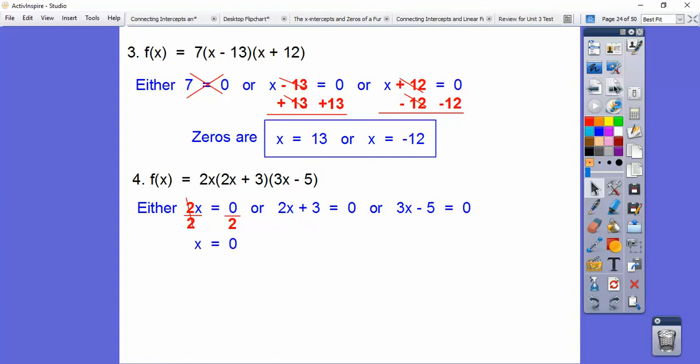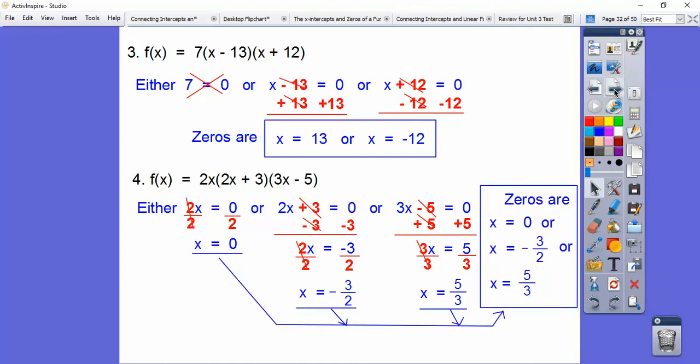This one here, we're going to go minus 3, minus 3. Okay, and then we've got to, now we've got to divide by 2, so we get negative 3 halves. Okay, here we're going to go plus 5, plus 5. So when we add 5 to both sides, then we've got to divide by 3, so we get 5 thirds. So our zeros are all three of those. x equals zero, or negative 3 halves, or positive 5 thirds.